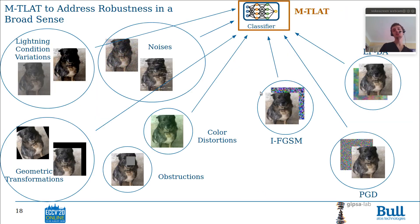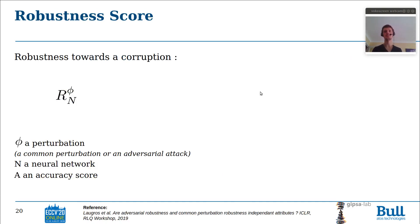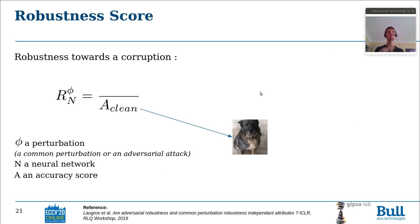Now I want to know: is it possible that MCLate is able to make neural networks more robust to a very wide range of common corruptions? To verify it, we propose to use the following benchmark that is composed of the corruptions of ImageNet-C, some additional common corruptions that we think are missing in ImageNet-C, and some adversarial attacks in white-box and black-box settings with a different amount of corruptions. To measure the robustness toward these corruptions, we use a metric called the robustness score.